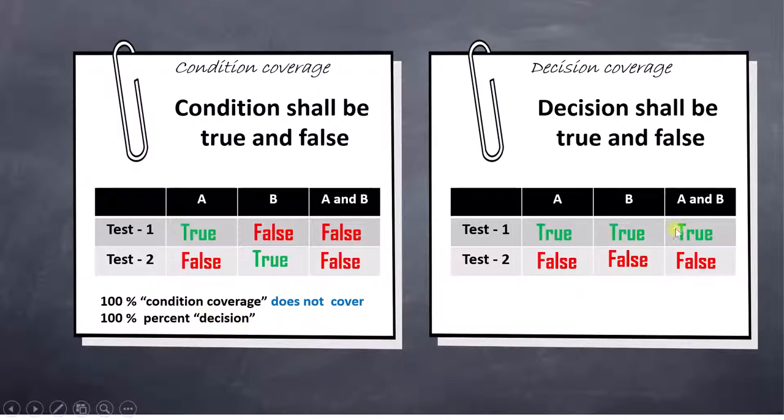When we come to the decision coverage, here our main focus was to make A and B true once and false once. In order to achieve this, we have selected these two combinations because these two are the simple combinations. For A true and for B true, for A false and for B also false. That way we have achieved 100% condition coverage as well as 100% decision coverage.